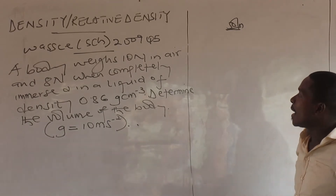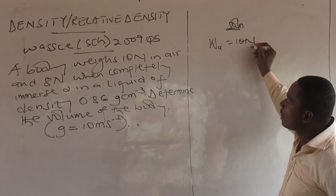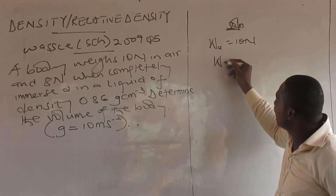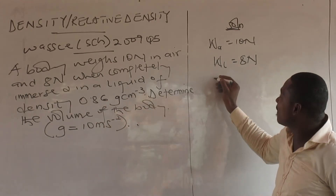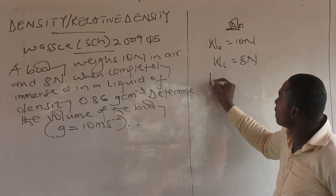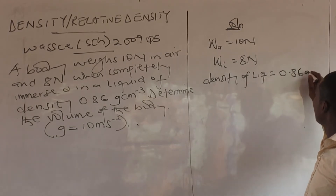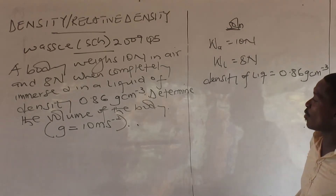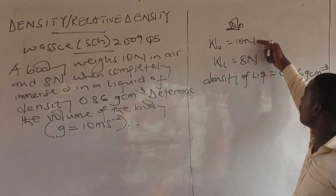Now let's look at Question 2. A body weighs 10 newtons in air — that is the weight in air — and 8 newtons when completely immersed in a liquid — that is the weight in liquid. The density of the liquid was given, but not in standard units; it is given in grams per cm³. We need to determine the volume of the body. Since we have newtons which are standard, we must convert the density to standard form.